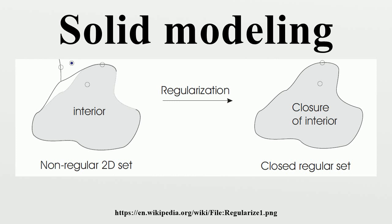Parameterized primitive instancing: This scheme is based on families of objects, where each member of a family is distinguishable from the others by a few parameters. Each object family is called a generic primitive, and individual objects within a family are called primitive instances. For example, a family of bolts is a generic primitive, and a single bolt specified by a particular set of parameters is a primitive instance. The distinguishing characteristic of pure parameterized instancing schemes is the lack of means for combining instances to create new structures representing new and more complex objects.